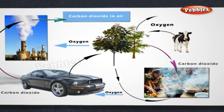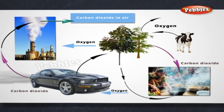Today we are burning much more fuel in cars, powerhouses, and factories than we did a hundred years ago. We have also cut down a large number of trees. This has upset the balance between carbon dioxide and oxygen in the air. Today, there is more carbon dioxide in the air than there was a hundred years ago.